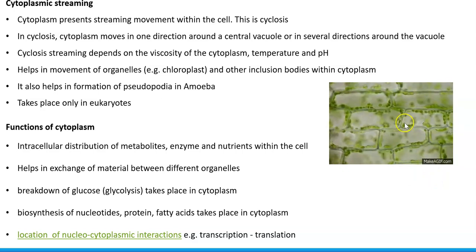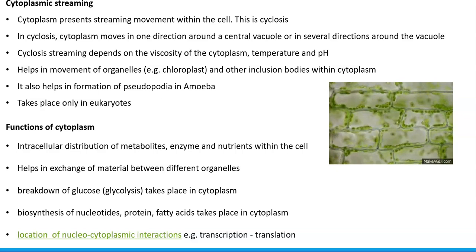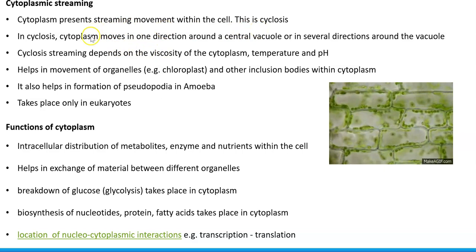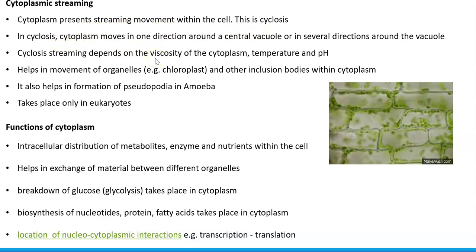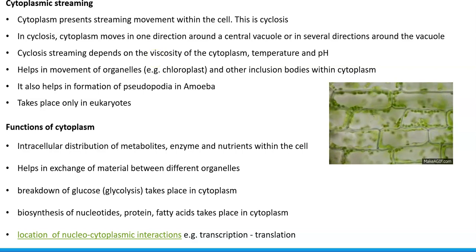The green colored things are chloroplast cells that are all moving by a process called cyclosis. The other term for cytoplasmic streaming is cyclosis. In cyclosis, cytoplasm moves in one direction around a central vacuole, or in several directions around the central vacuole.